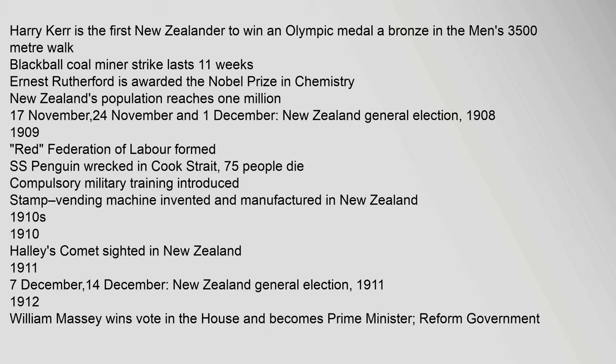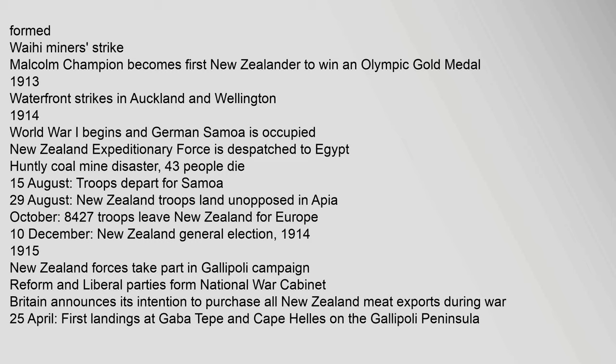1910s. 1910: Halley's Comet sighted in New Zealand. 1911: 7 December – 14 December: New Zealand general election. 1911–1912: William Massey wins vote in the House and becomes Prime Minister; Reform government formed. Waihi Miners Strike. Malcolm Champion becomes first New Zealander to win an Olympic gold medal. 1913: Waterfront strikes in Auckland and Wellington.